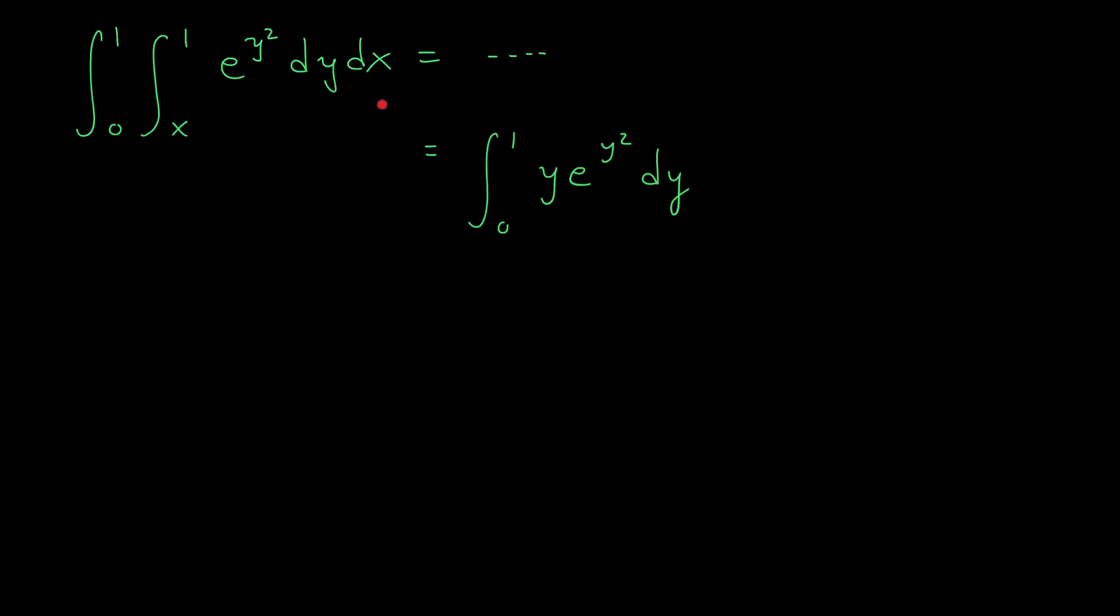Okay, folks, by switching the order of integration, we've managed to rewrite our double integral as the integral from 0 to 1 of y e to the y squared dy. And now we're going to evaluate this thing using substitution. We'll let u be this expression up here. u is going to be y squared. If this is the case, then du is 2y dy. Or in other words, 1 over 2y du is equal to dy. So I can replace this dy term with 1 over 2y du. I get the integral of y e to the u times 1 over 2y du. And you can see we're going to get some cancellation here, right?